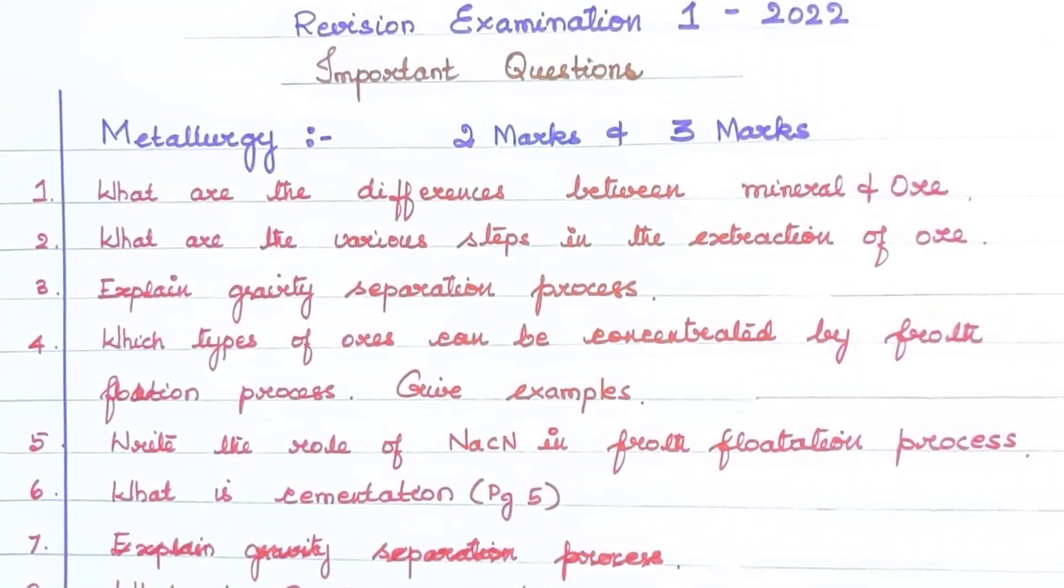First question, what are the differences between mineral and ore? Second question, what are the various steps in the extraction of ore? Third one, gravity separation process. Fourth one, which types of ore can be concentrated by froth flotation process? Give example.